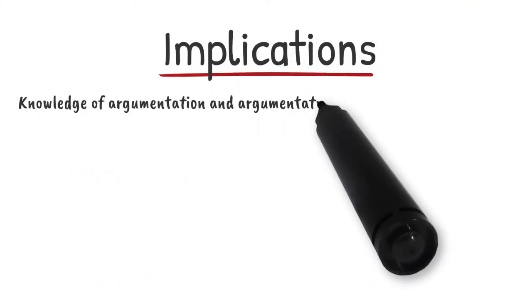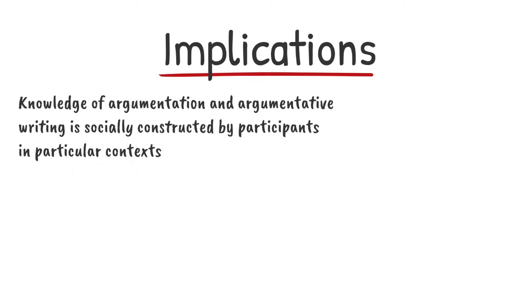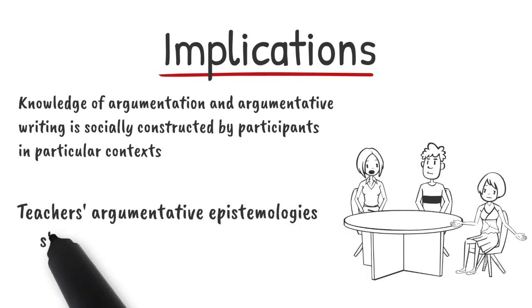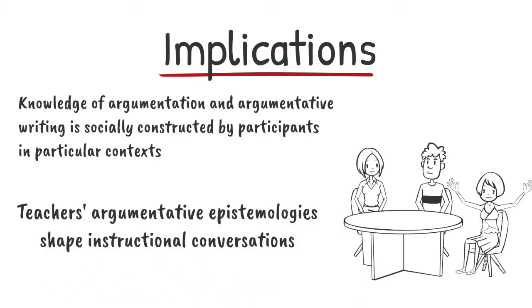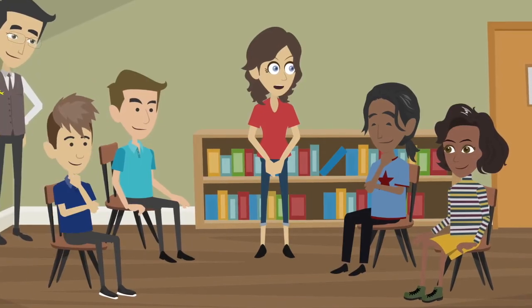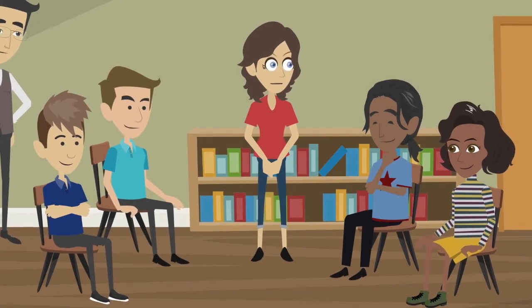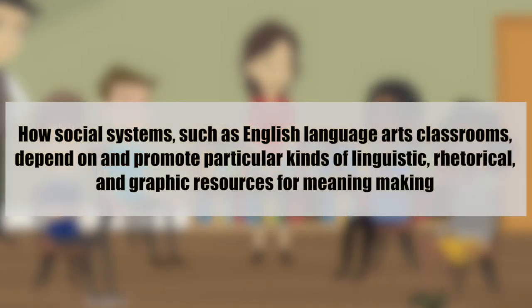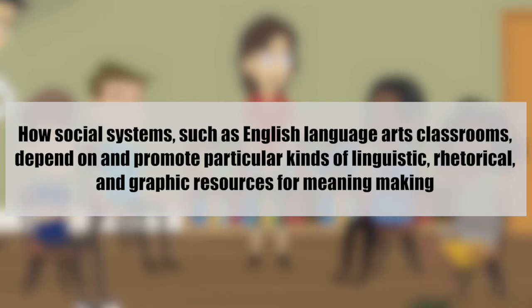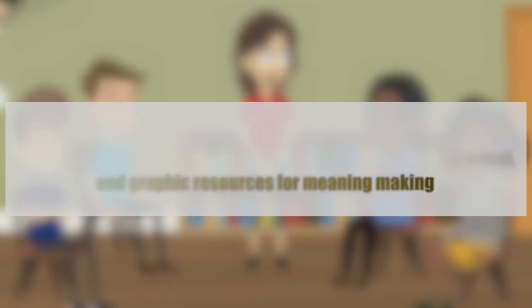In terms of implications, we argue that knowledge of argumentation and argumentative writing is socially constructed by participants in particular contexts. We argue that teachers' argumentative epistemologies shape instructional conversations, a phenomenon easily overlooked if teachers and researchers only consider students' written arguments. We think that the social practice perspective raises significant questions worth pursuing, such as how social systems, such as English language arts classrooms, depend on and promote particular kinds of linguistic, rhetorical, and graphic resources for meaning-making.